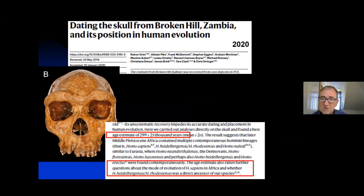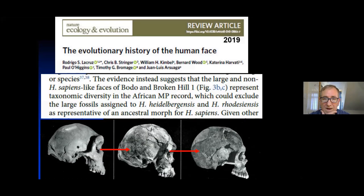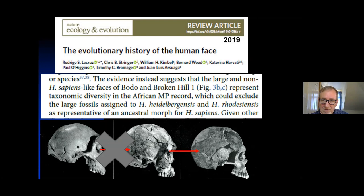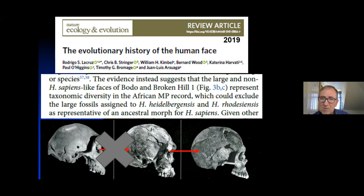This much more primitive morphology is only around the same age as the Jebel Irhoud material and close in age to the much more derived morphology of Omo Kibish I. Furthermore, the facial morphology of the big skulls assigned to heidelbergensis rhodesiensis — forms like Bodo and Broken Hill — suggests that their large, non-Homo-sapiens-like faces represent taxonomic diversity in the African Middle Pleistocene, which could exclude these large fossils as representatives of an ancestral morph for Homo sapiens. Their facial morphology is derived away from the ancestral form we would expect for both Homo sapiens and Homo neanderthalensis. We think that ancestor's morphology was probably closer to Homo antecessor. This puts a big question mark over the simple unilinear sequence we used to see in Africa.